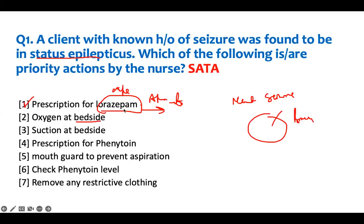Oxygen at bedside — yes. When a patient is having a seizure and they finish, they need oxygen. You have to check their vitals and provide oxygen. They may be sedated, they may be confused, they may aspirate. So they need oxygen at bedside after the seizure. Suction — yes. They may aspirate, so you need something to prevent aspiration. Suction at bedside is correct. You don't suction them while they are seizing, but when they're finished, yes, you do that.